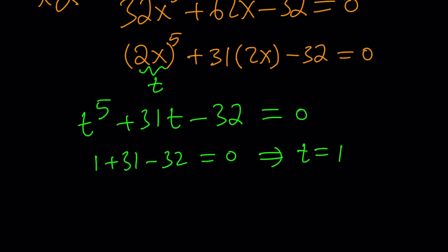This means 1 is a solution. So, T equals 1 is a solution because if you plug it in, it gives you this, which is 0. Make sense?